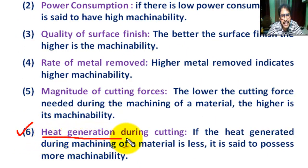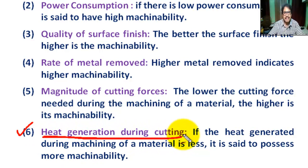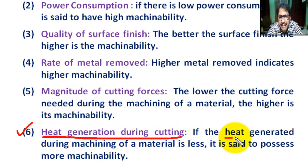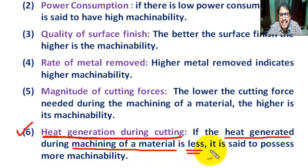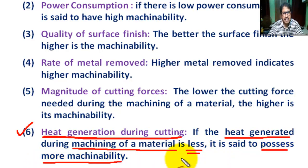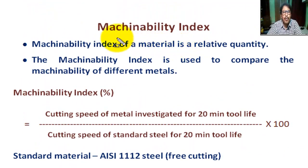Number six: heat generation during machining. If the heat generated during machining of a material is less, it is said to possess more machinability.